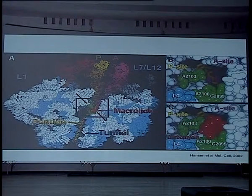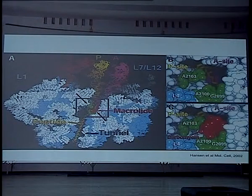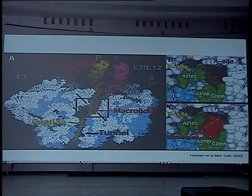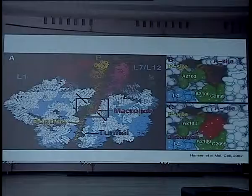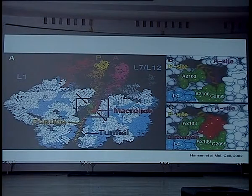If we split the ribosome and look in this area, red is where the macrolide binds, and there's where peptide bond formation is. If we look up the tunnel, you see that's where peptide bond formation occurs and then there's where the antibiotic binds. It's blocking the exit of the polypeptide — I call it molecular constipation, but it just prevents the exit. In green are bases whose mutations give rise to resistance, and you can see what's happening is changing the shape.